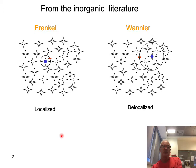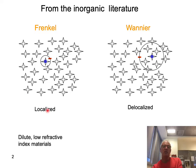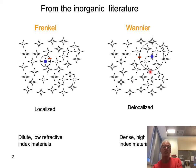The first classification is the one found largely in the inorganic literature, where we have two types of excitons: one which is tightly bound, where the distance between the electron and the hole is very small, and the other where the distance is large. One is localized, the other is delocalized. The localized exciton would be in materials that don't have many electrons to screen the attraction — dilute materials with low refractive index — while the other would have a high density of electrons, high optical density, and a higher refractive index.